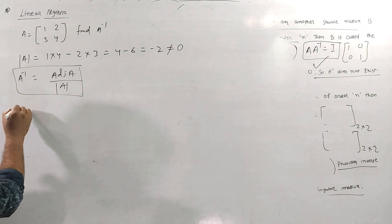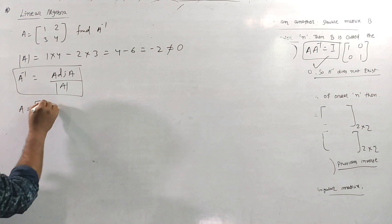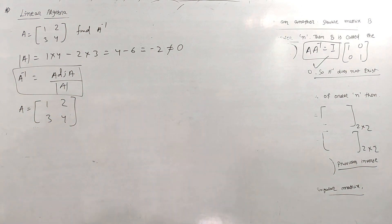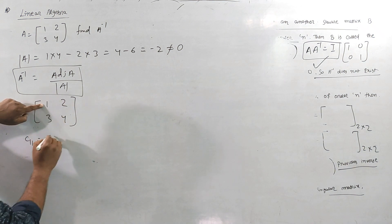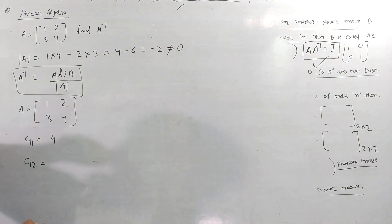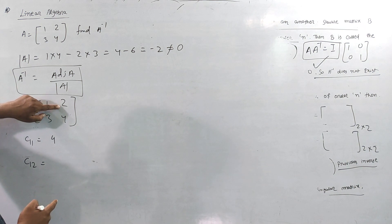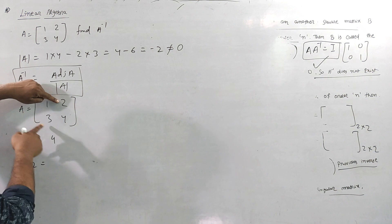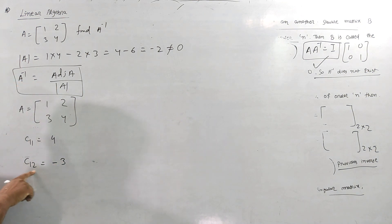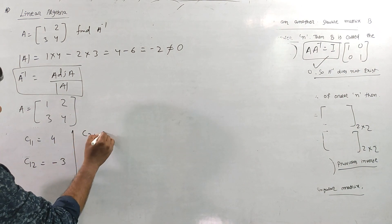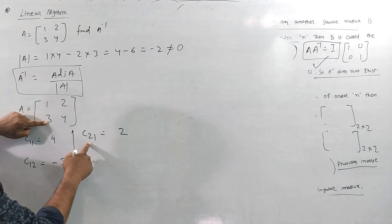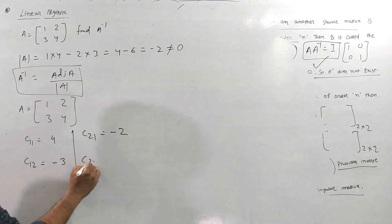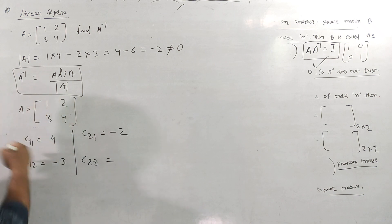A inverse formula is adjoint A divided by mod A. Let's find adjoint A using cofactors. C11 is the element at row 1, column 1. C12 is the element — the first row, second column gives minus 3. Since 1 plus 2 equals 3 which is odd, the sign changes. C21 is element 2, giving sign change. C22 is as it is.